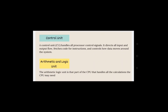The control unit handles all processor control signals. It directs all input and output flow, fetches code for instructions, and controls how data moves around the system — giving direction to the processor. The Arithmetic Logic Unit (ALU) is the part of the CPU that handles all calculations; it is a combinational digital circuit that performs arithmetic as well as bitwise operations.